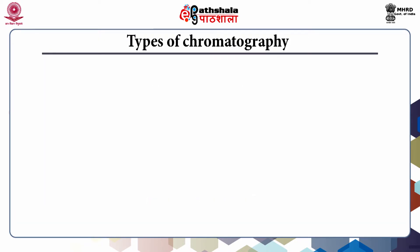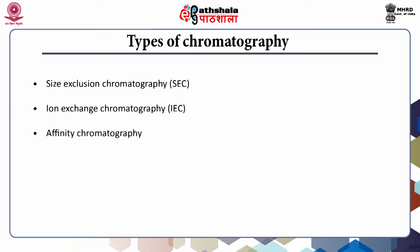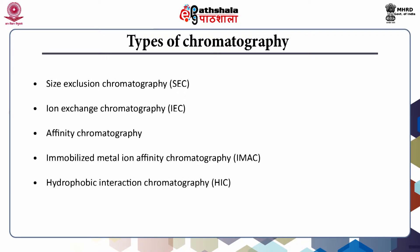There are a number of chromatographic methods used for purification purposes. The major types include size exclusion chromatography, ion exchange chromatography, affinity chromatography, immobilized metal ion chromatography (IMAC), hydrophobic interaction chromatography (HIC), and high pressure liquid chromatography (HPLC). Usually a protein purification protocol may contain one or more chromatographic steps, and it is essential to choose the most appropriate method for optimized purification.